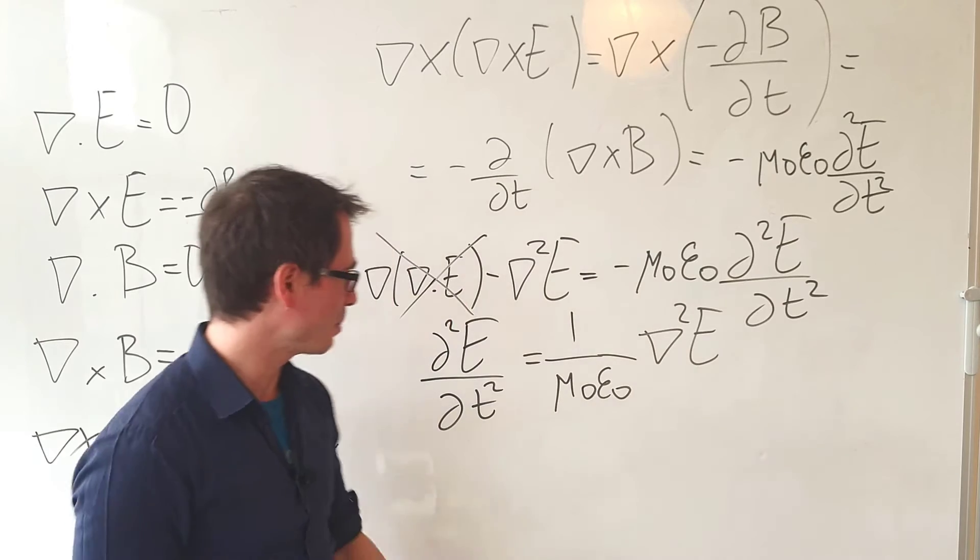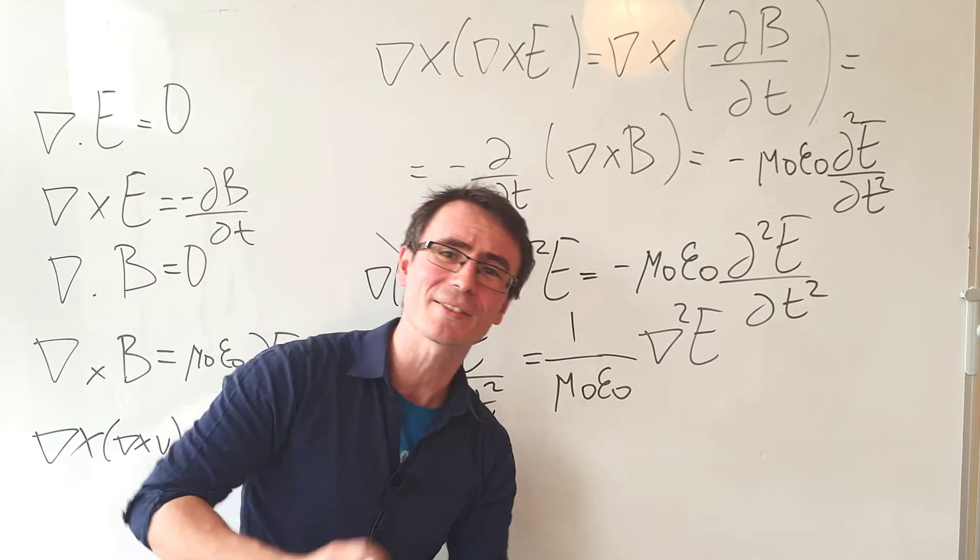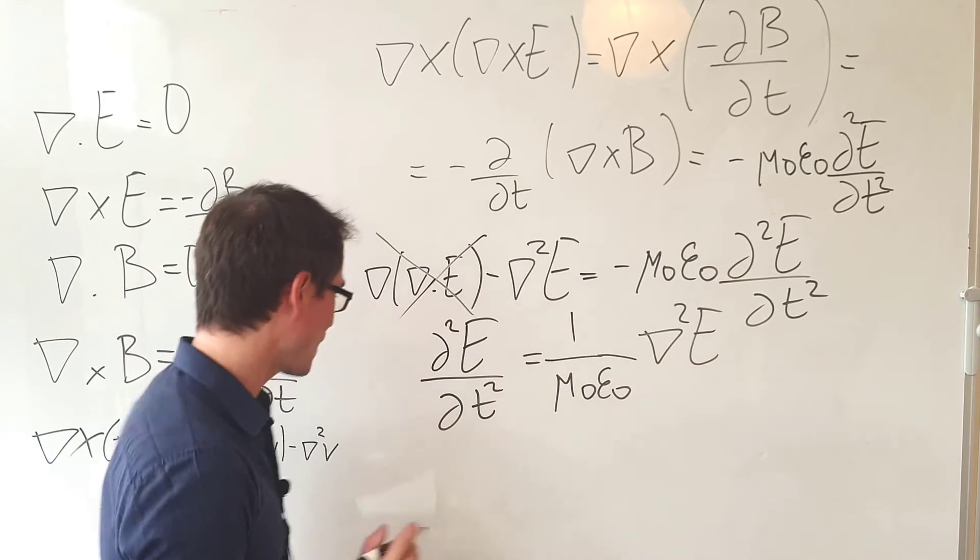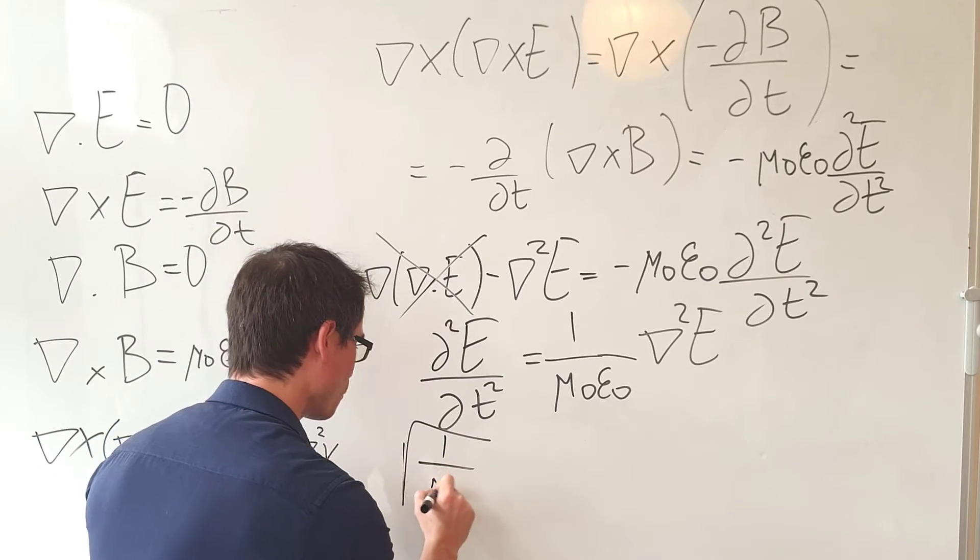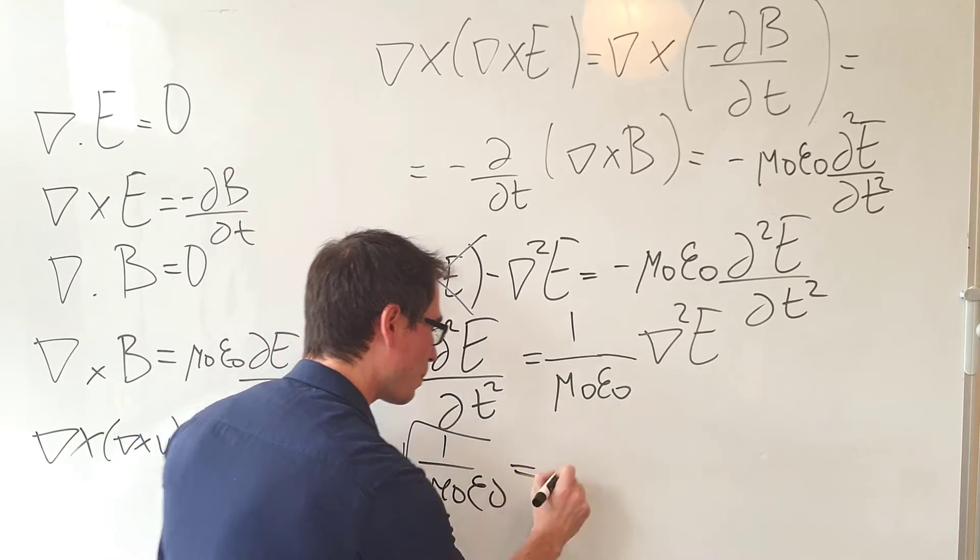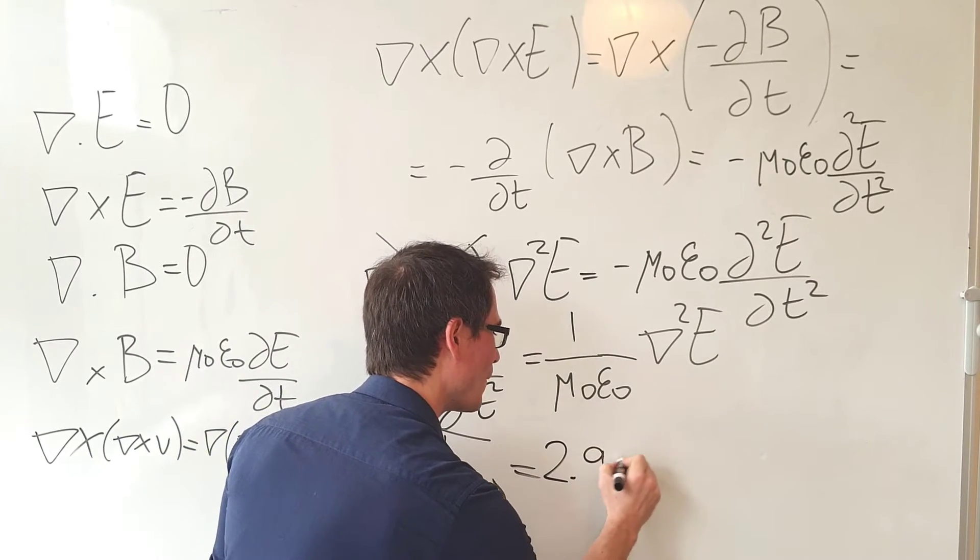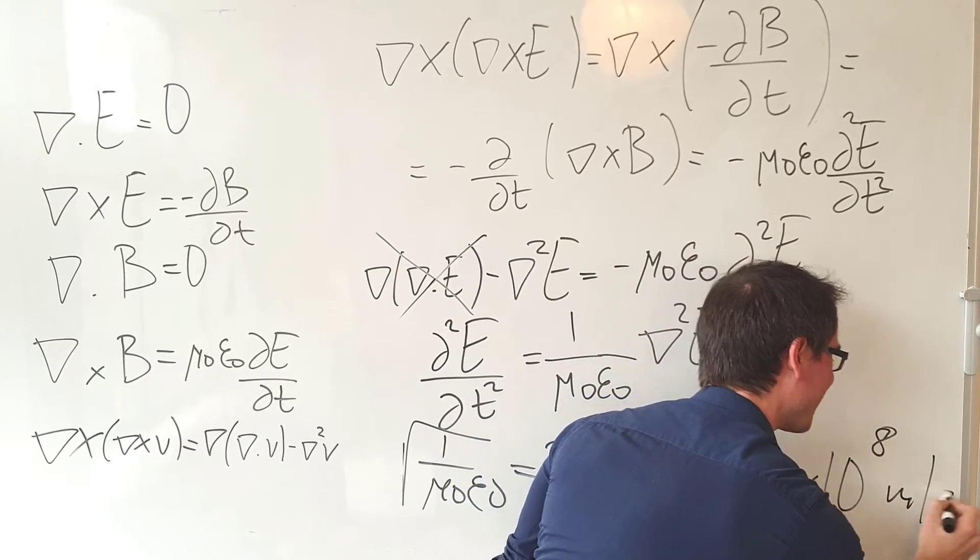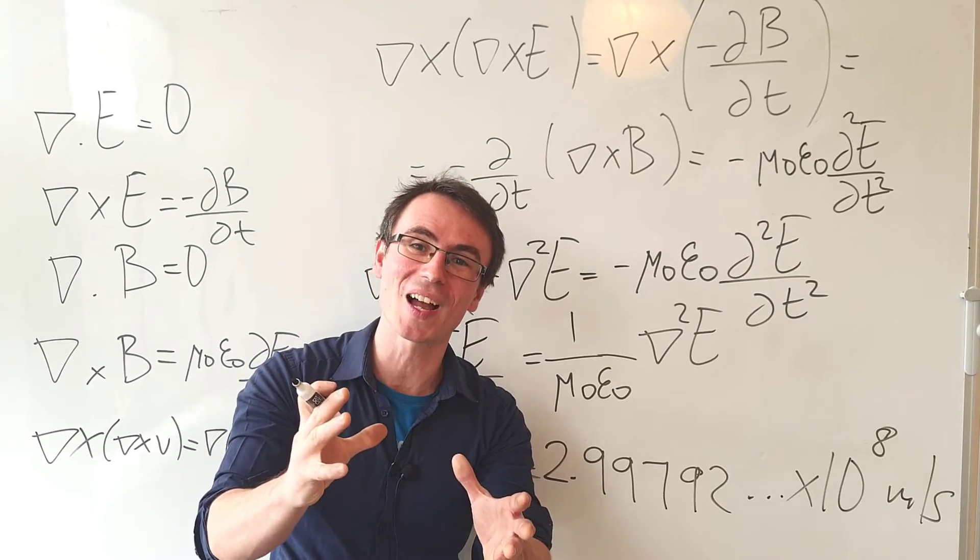Well, let's actually calculate the speed. We know the permeability of space and we know the permittivity of space. And if this expression is the square of the speed of light, all we would need to do is just square root this. And if we put this into a calculator, we're going to get around 2.99 etc. times 10⁸ meters per second. And this right here is the speed of light.